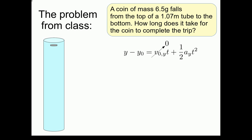In this particular example, the initial velocity of the coin, v0, is equal to 0, because the coin is just being dropped. Following the algebra you did in class, we can conclude that the time it takes for the coin to hit the bottom of the tube is given by this expression.